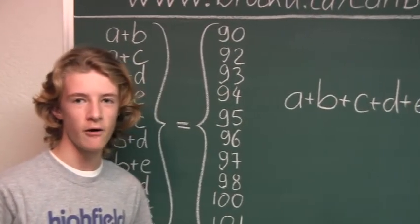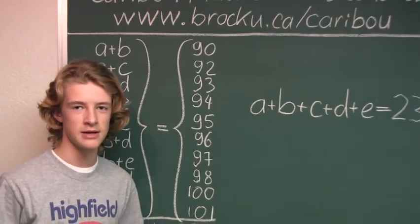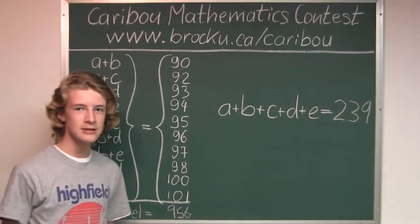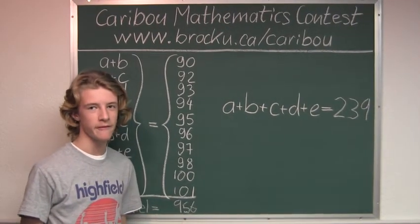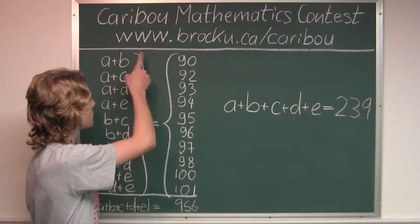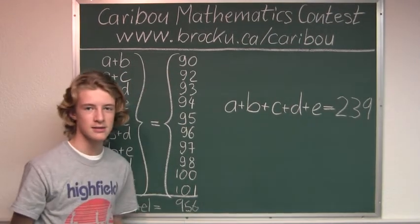So the combined weight of all 5 children is 239 kg. If you would like to know more about this contest, please feel free to visit our website at www.brocku.ca/caribou.